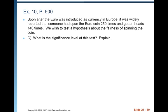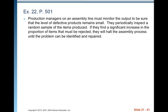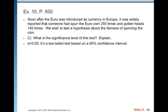What is the significance level of this test? Alpha is 0.05, and the reason is it's a two-tailed test based on a 95% confidence interval. This gave you a chance to work with significance levels and make a confidence interval, and hopefully it helped you see the relationship between confidence intervals and hypothesis tests.